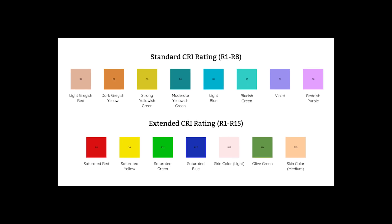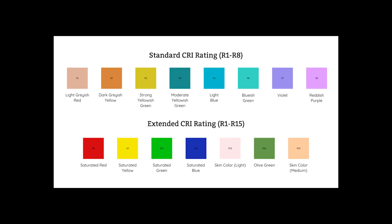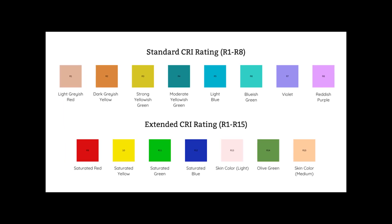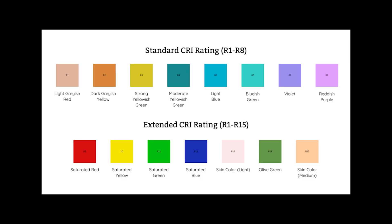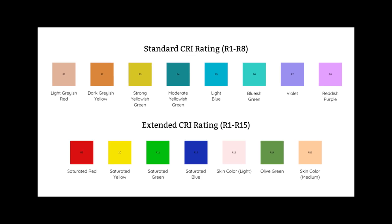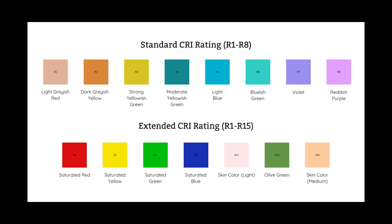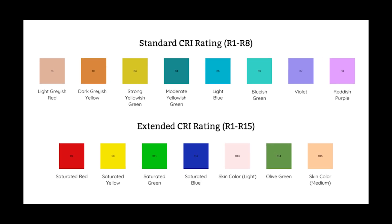That's why you'll sometimes see extended CRI, which uses R1 through R14, which adds saturated colors like R9, which is a strong red, which is critical for skin tones, food, and medical lighting. R12, which is a saturated blue. R13, which is Caucasian skin. And R14, which is foliage green.